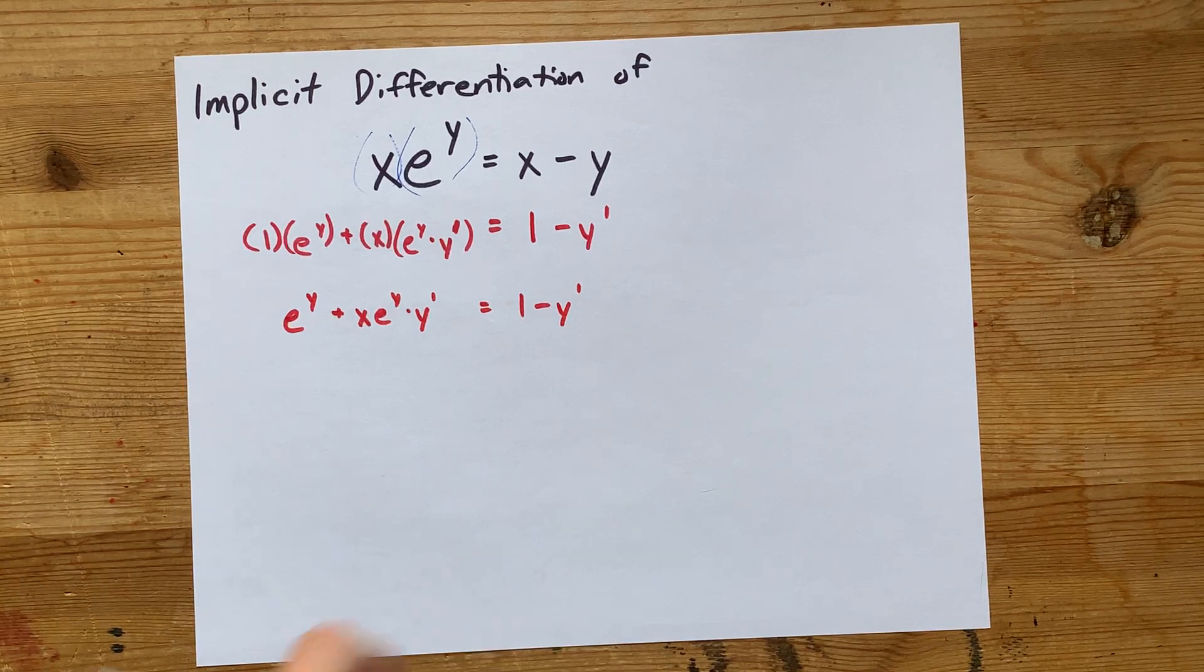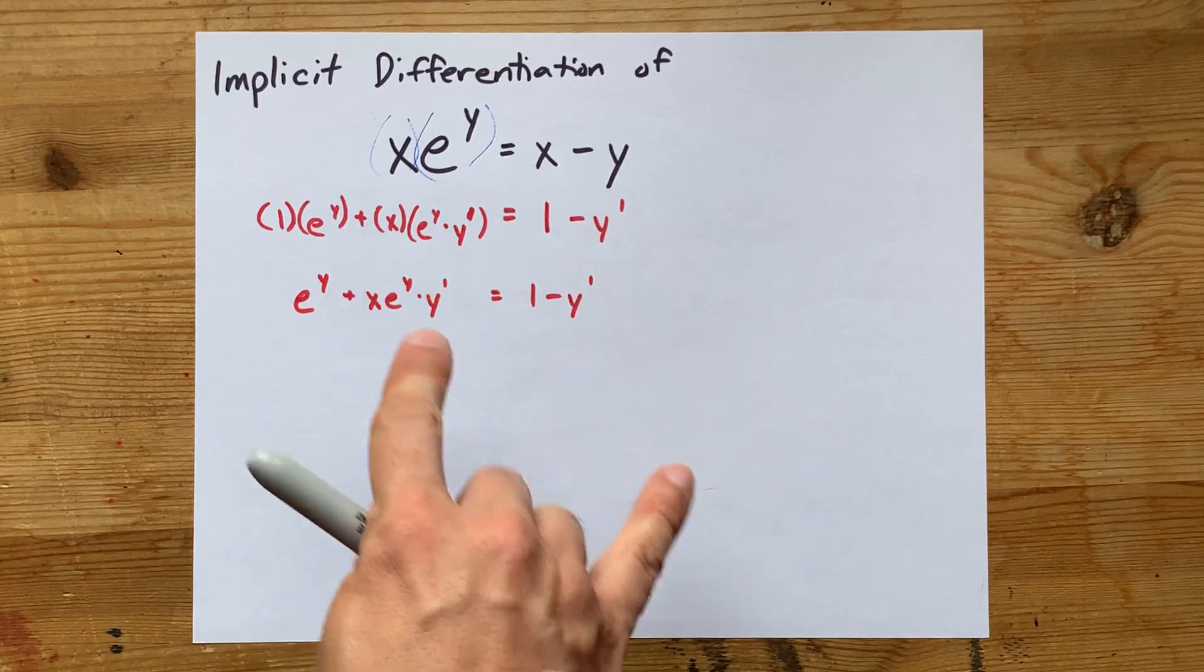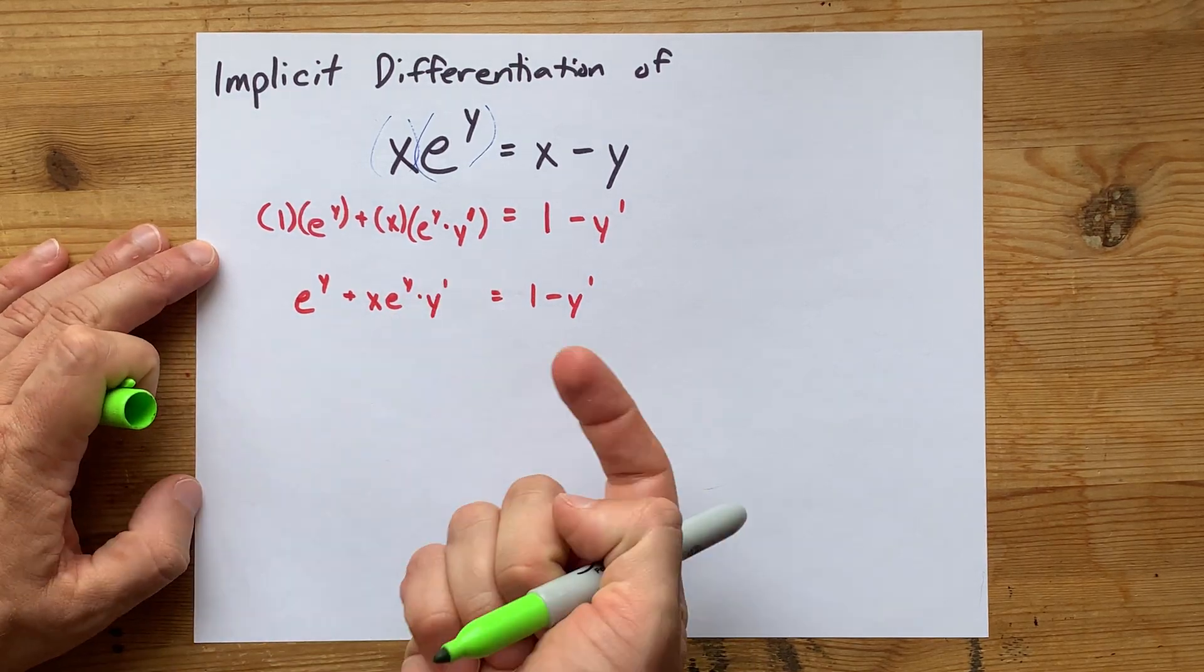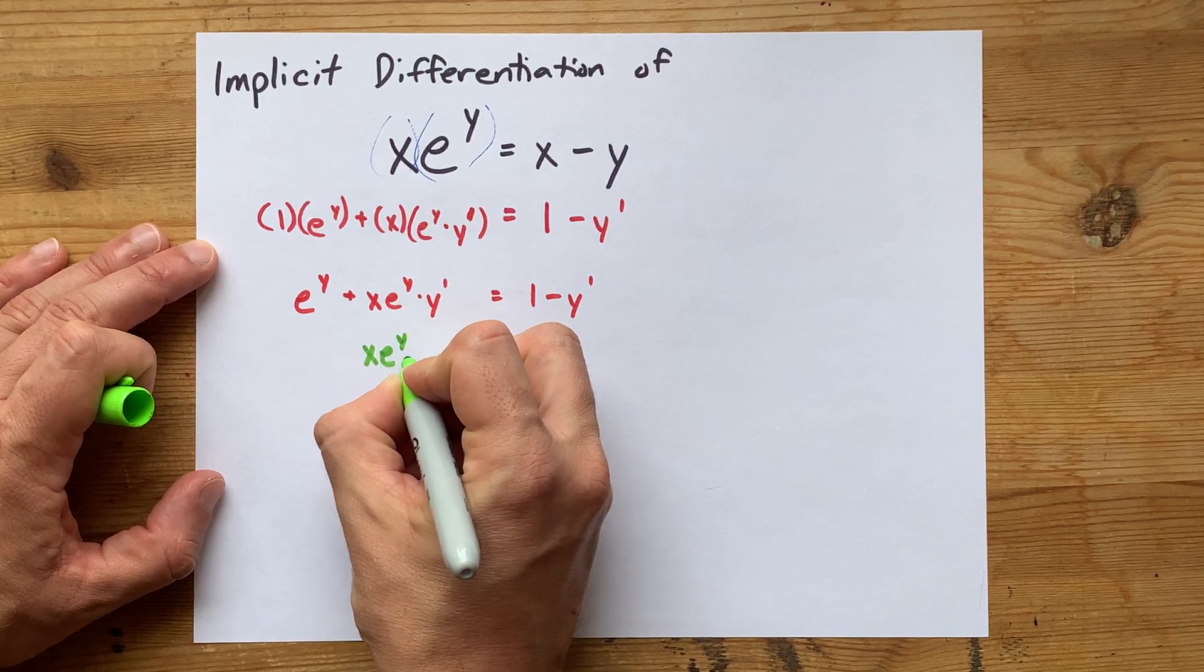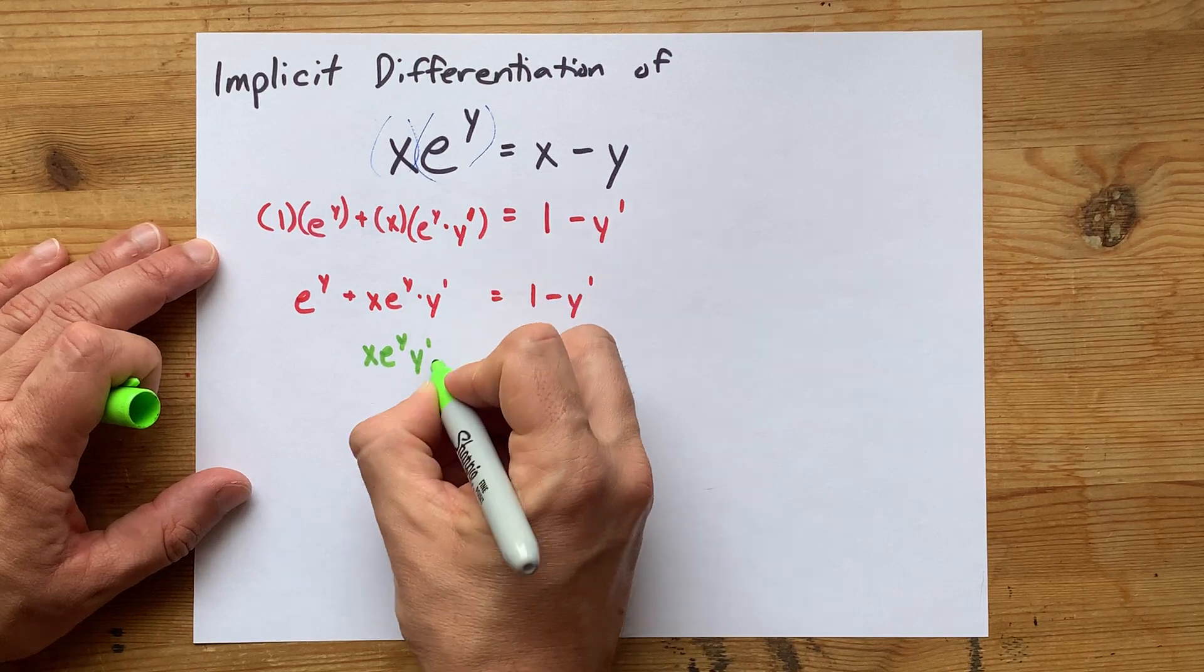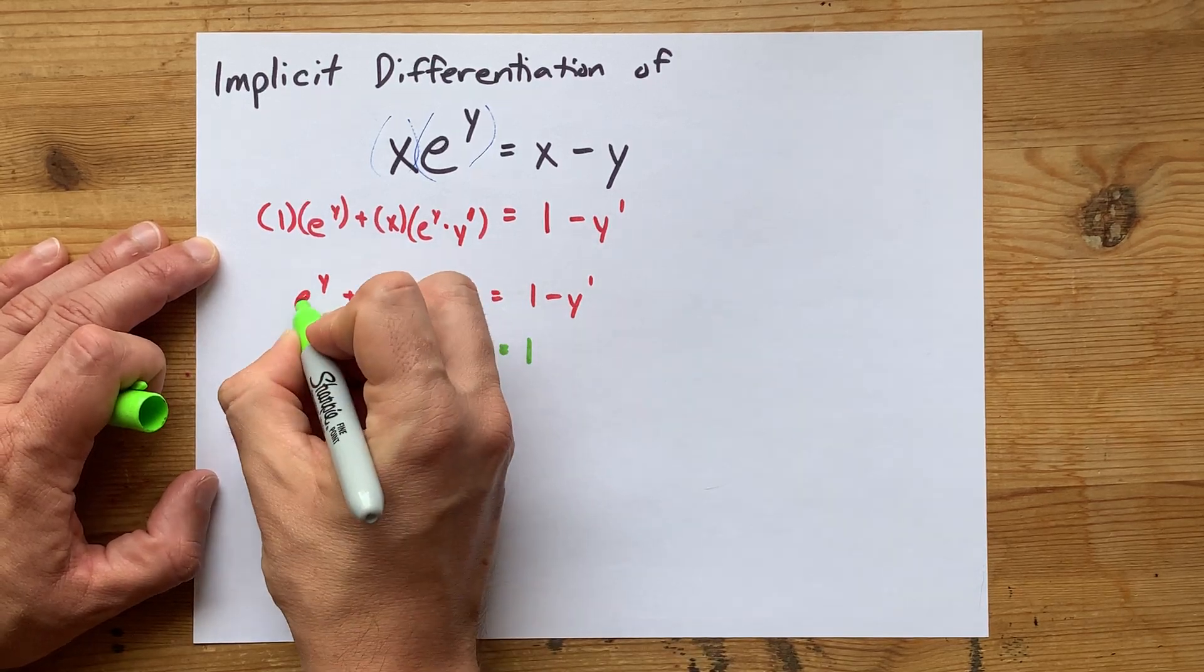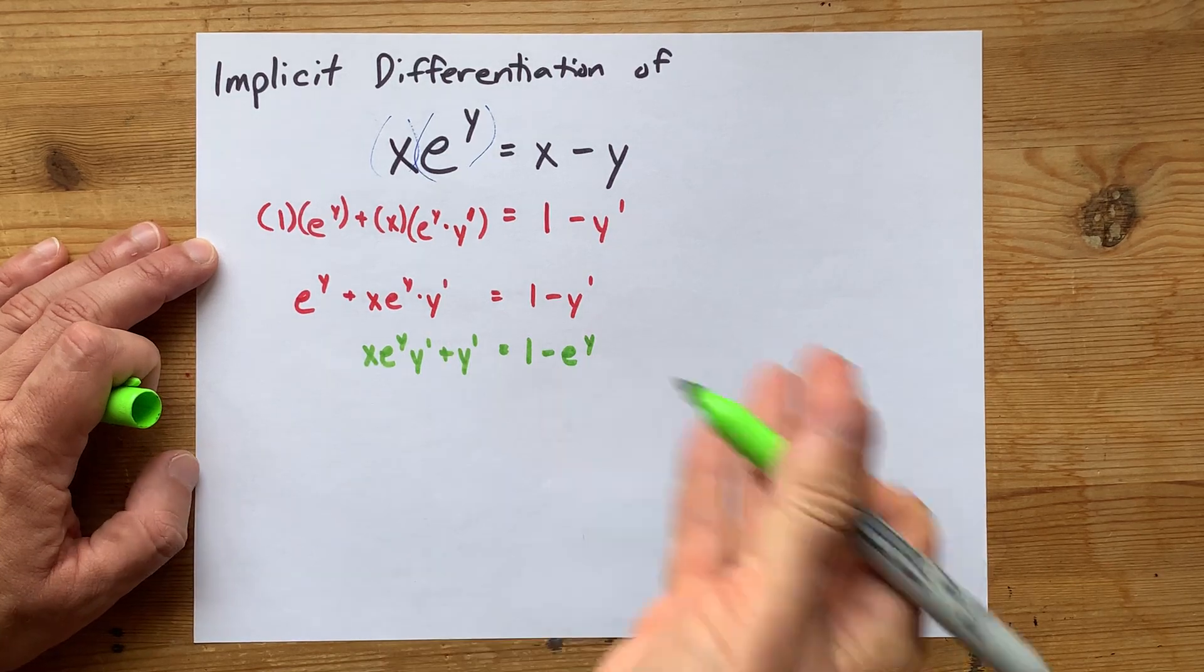Now, my strategy for doing this is usually to collect all the terms that have y prime in them on one side, and everything else goes to the other side. I'm going to put my y prime stuff on the left, so I'm going to keep my x e to the y y prime here, and this minus y prime from the right is going to come over, and I'm going to add it on the other side. Now, the 1 stays on the right, and the e to the y needs to move to the other side, so it becomes minus e to the y.